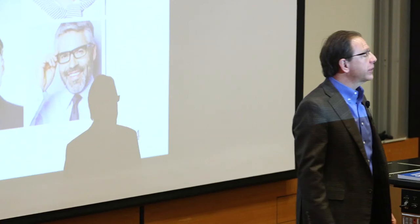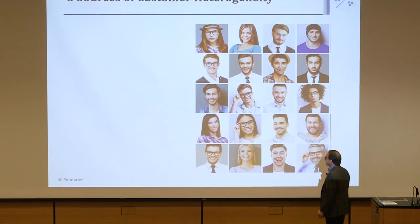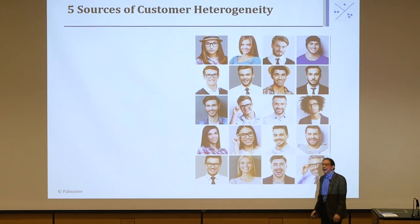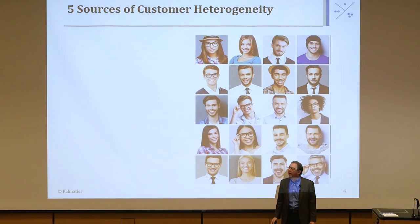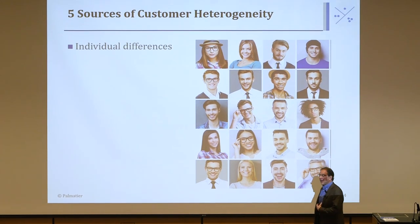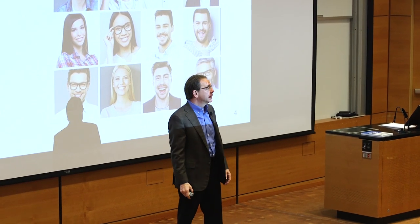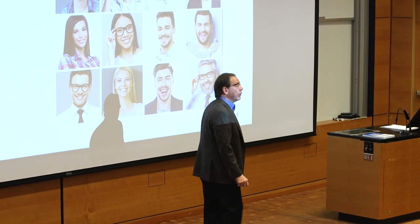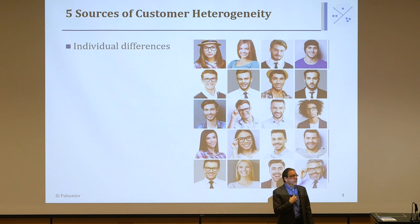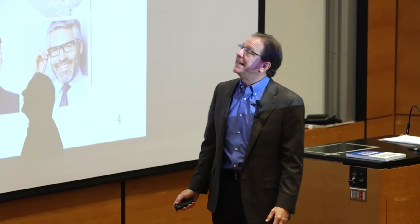Where does customer heterogeneity come from? We'll look at five sources of why customers' needs differ for your product. First is individual differences. Psychologists have found that people typically follow a bell curve on most characteristics — favorite color, how spicy they like food. That's just their individual makeup — their genetic makeup combined to create unique desires.